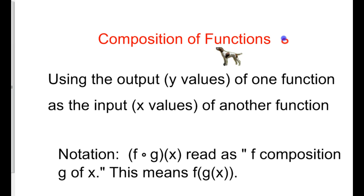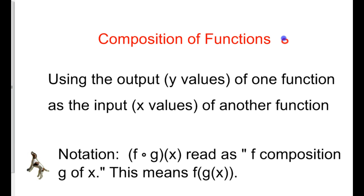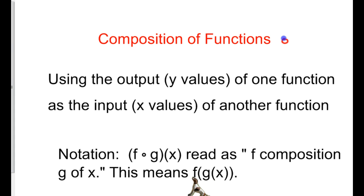Today we're going to talk about composition of functions. The definition of a composition is just using the output, or the y values, of one function as the input, or x values, of another function. The notation we have for composition is as follows: it's f, with that little empty circle — f circle g of x. We read this as 'f composition g of x.' This means f parenthesis g parenthesis of x — I'm going to take the f equation and compose it with the g equation.